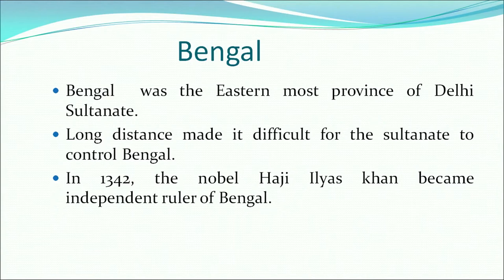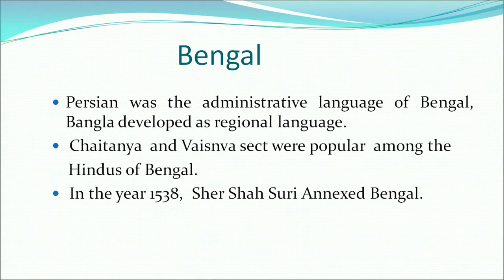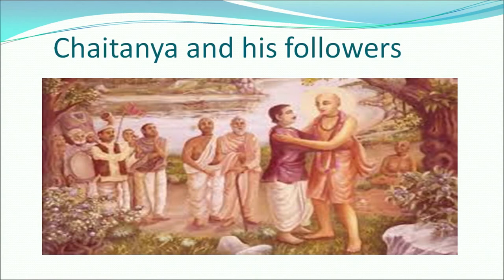The next regional state is Bengal. Bengal was the easternmost province of the Delhi Sultanate, and long distances made it difficult for the Sultanate to control it. The noble Haji Ilyas Khan became independent ruler of Bengal after the weakening of the central power. Persian was the administrative language, but Bangla developed as the regional language. Much literary work was produced in this language. The Chaitanya and Vaishnava sect was popular among the Hindus of Bengal. In 1538, Sher Shah Suri finally annexed Bengal.